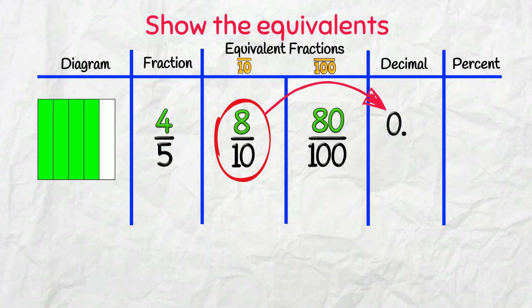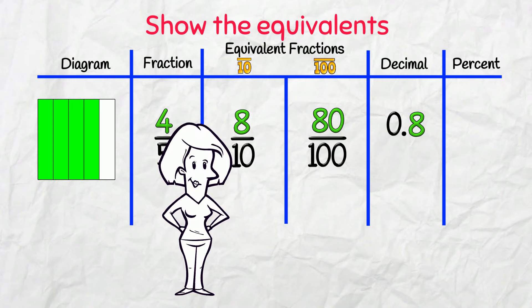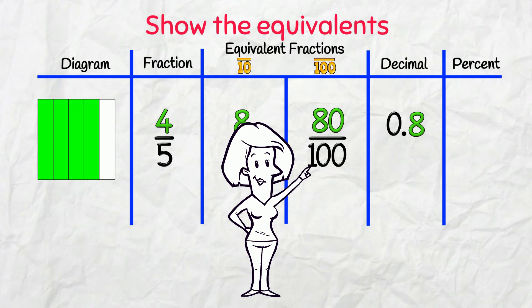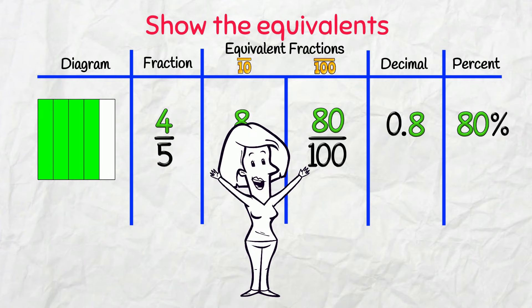8 tenths is 0.8, and for the percentage, I need that denominator of 100. 80 over 100 equals 80%.